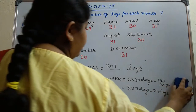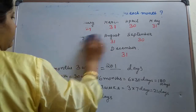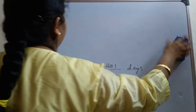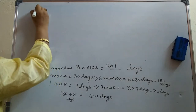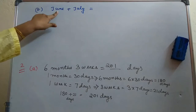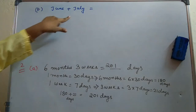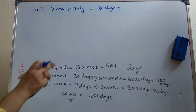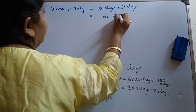Now let us move to the next question — that is bit B: June plus July. Here the name of the month is specified, so you have to write the exact number of days. June has 30 days and July has 31 days. So 30 plus 31 makes 61 days.